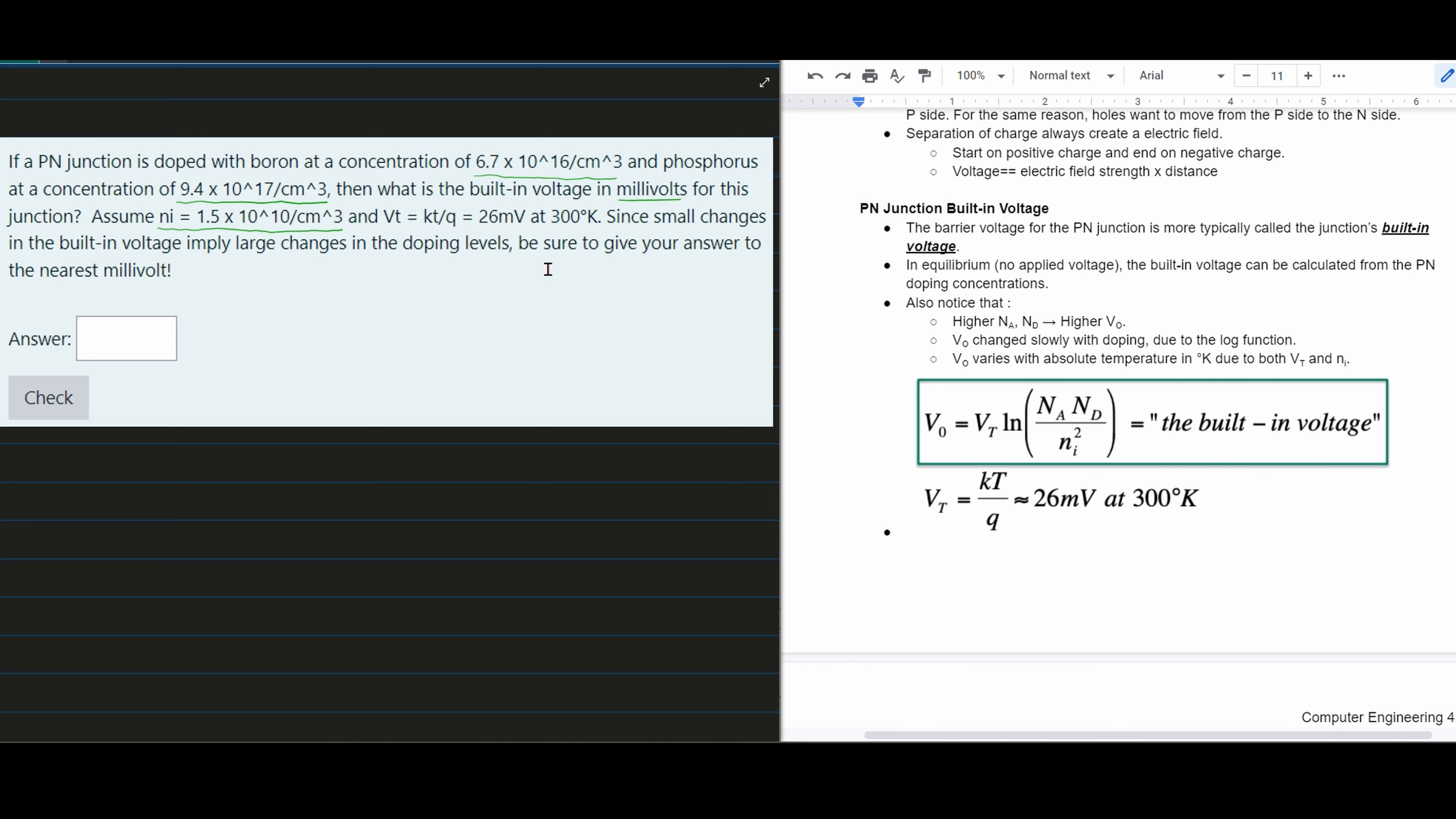We have the P-N junction built-in voltage formula. We want to find the voltage output Vout, and to find Vout, we need to find Vt.